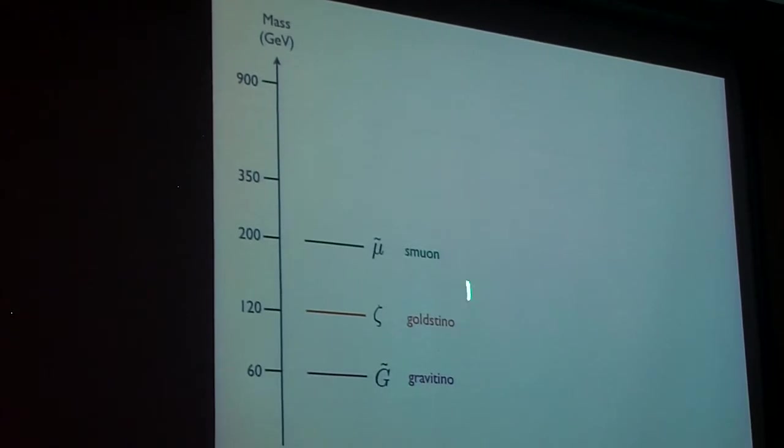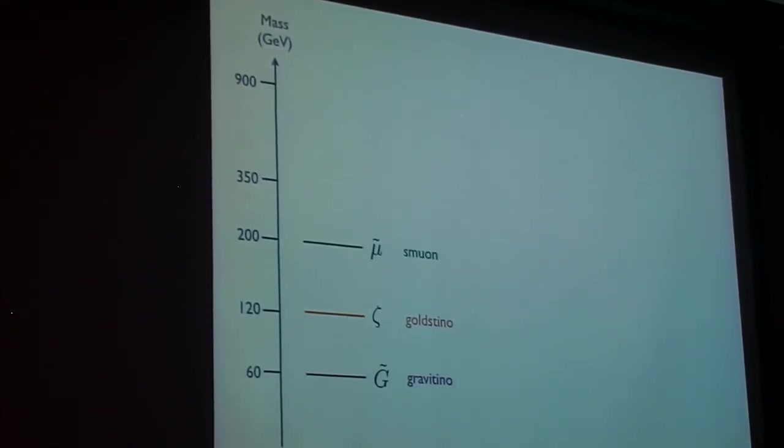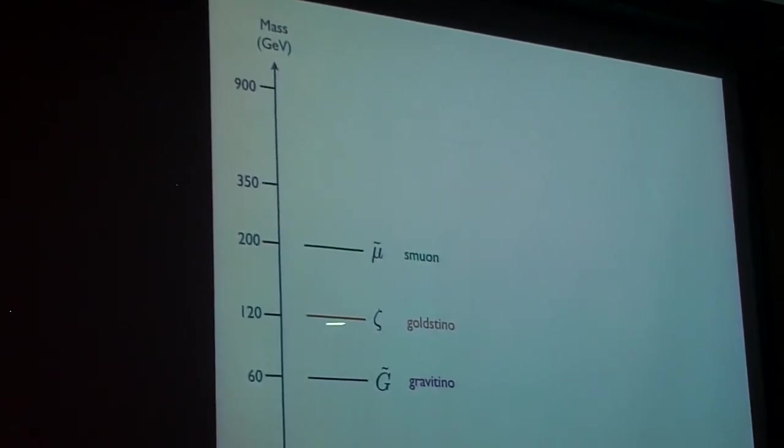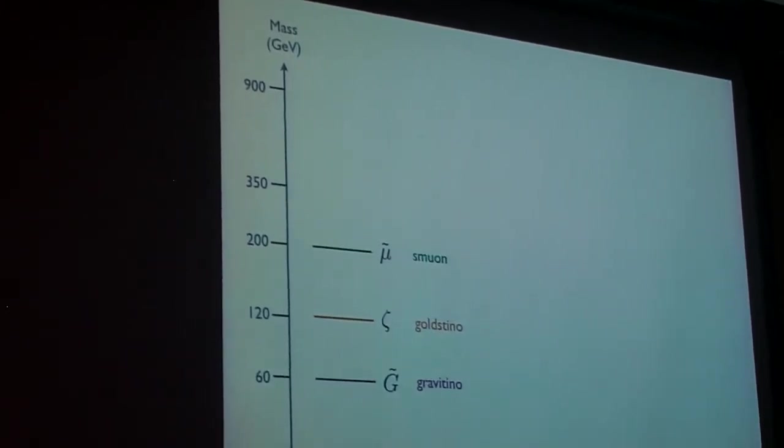We want to find some experimental measurement that would tell us about these states. Here are their various masses. Note that I put the Gravitino at exactly half the mass of the Goldstino, as predicted by this crazy theory.